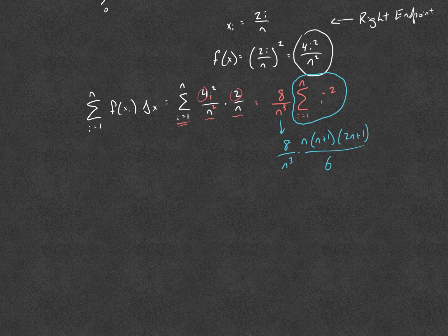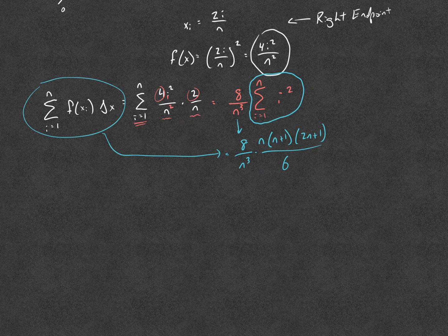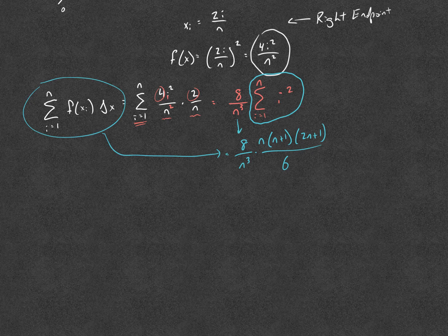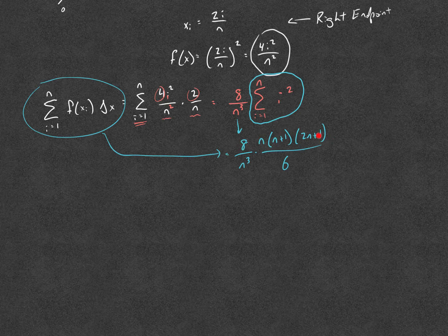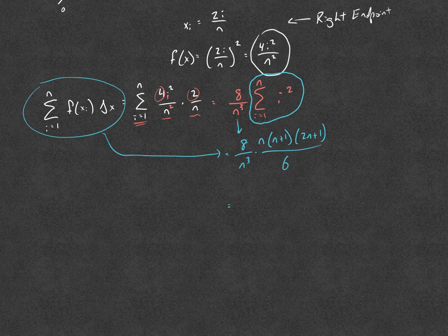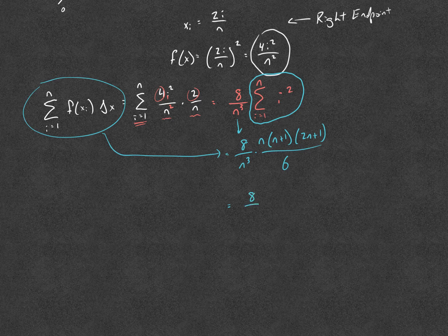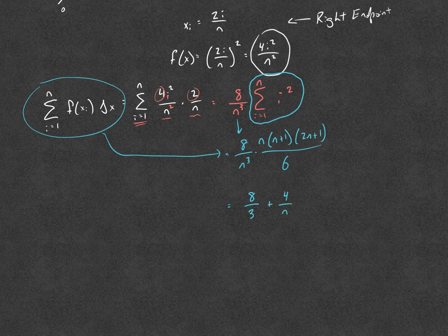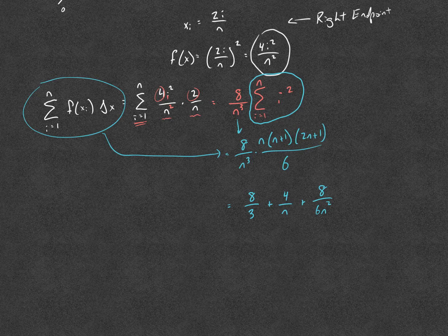And we're going to keep going with this. This, remember, ultimately is how we are evaluating this Riemann sum. If you simplify out all of this algebra, distribute up in the numerator and simplify the 8 over 6 a little bit, if you distribute in the numerator and expand all that algebra, we can actually separate this into 3 separate fractions. What you end up with after you do all the algebra is 8 over 3 plus 4 over n plus 8 over 6n squared. That's what that Riemann sum simplifies to using formulas and your algebra skills.